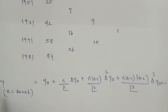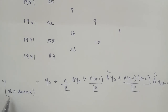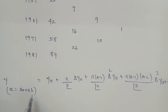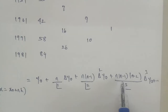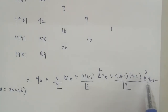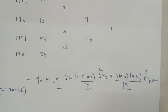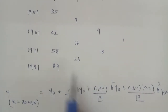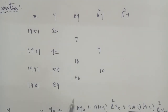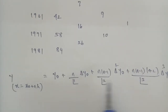The Newton's Forward Interpolation formula is: y(x) = y₀ + (n/1!) Δy₀ + (n(n-1)/2!) Δ²y₀ + (n(n-1)(n-2)/3!) Δ³y₀ + ..., where x = x₀ + nh.